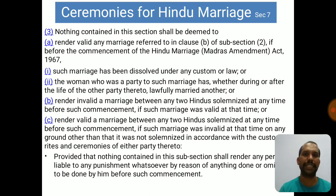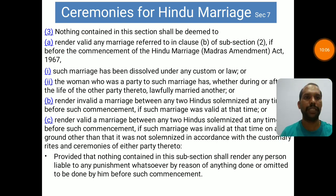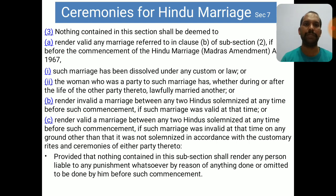Section 7(3) states: nothing contained in this section shall be deemed to render valid any marriage referred to in clause (b) of sub-section (2) if, before the commencement of the Hindu Marriage (Madras Amendment) Act 1967, such marriage has been dissolved under any custom or law, or the woman who was a party to such marriage has lawfully married another — whether during or after the life of the other party — nor shall it render invalid a marriage between any two Hindus solemnized before such commencement if that marriage was invalid at the time on any ground other than that it was not solemnized in accordance with the customary rites and ceremonies of either party.